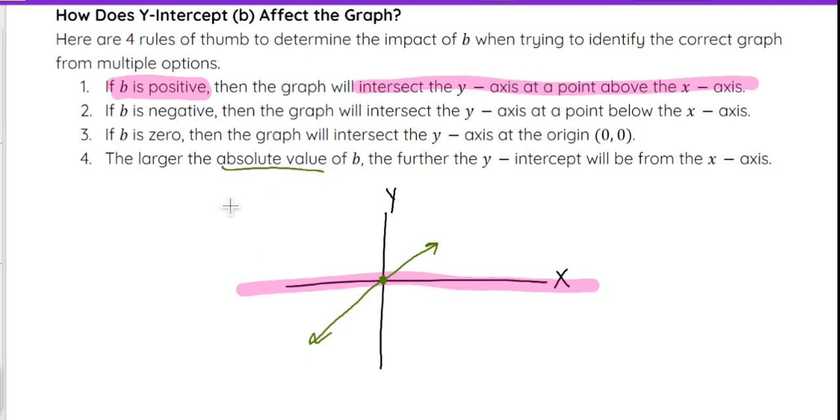Similar concept here in terms of absolute value means just ignoring the sign, the plus or minus sign. So the absolute value of b is referencing, for example...